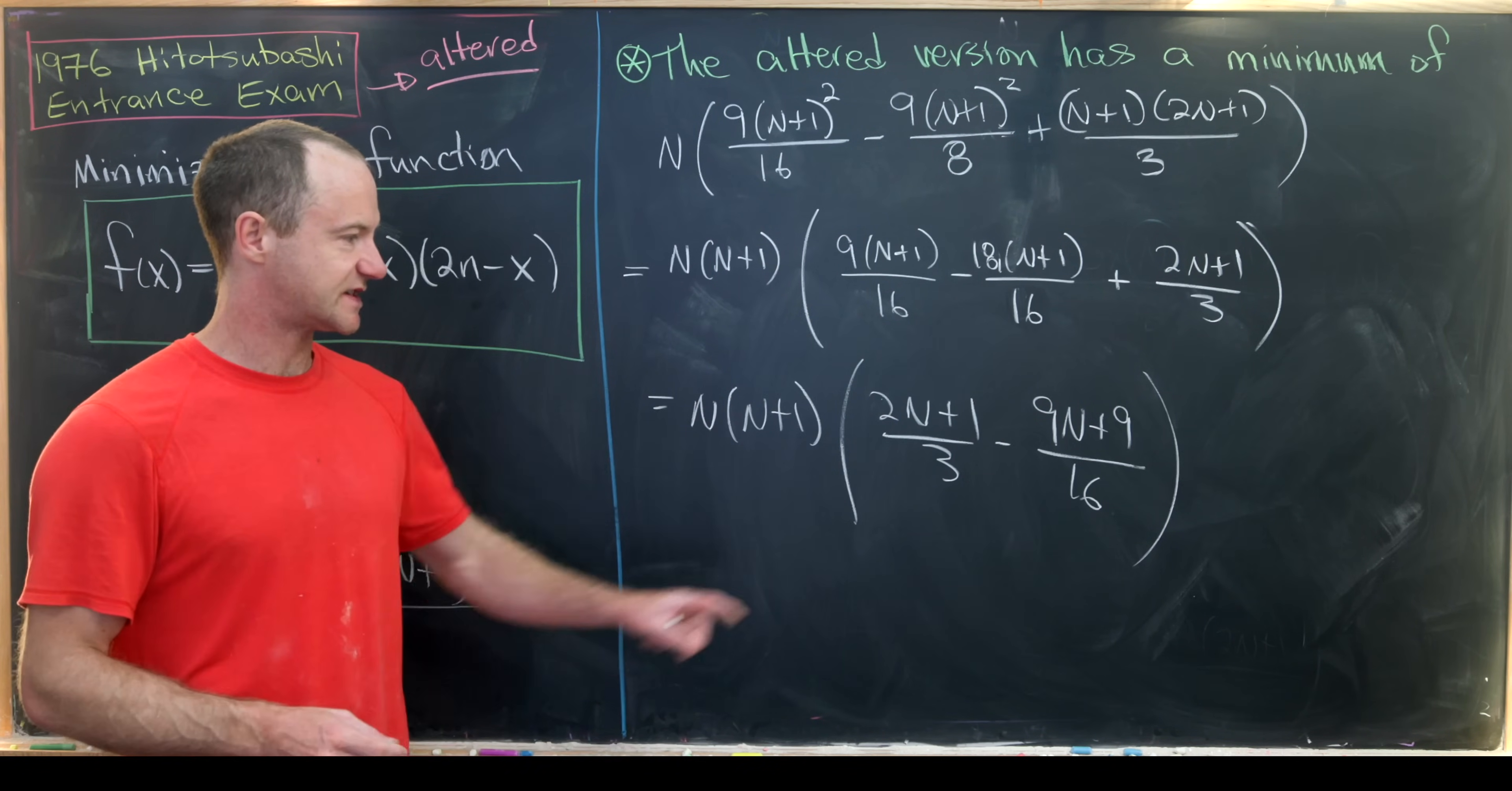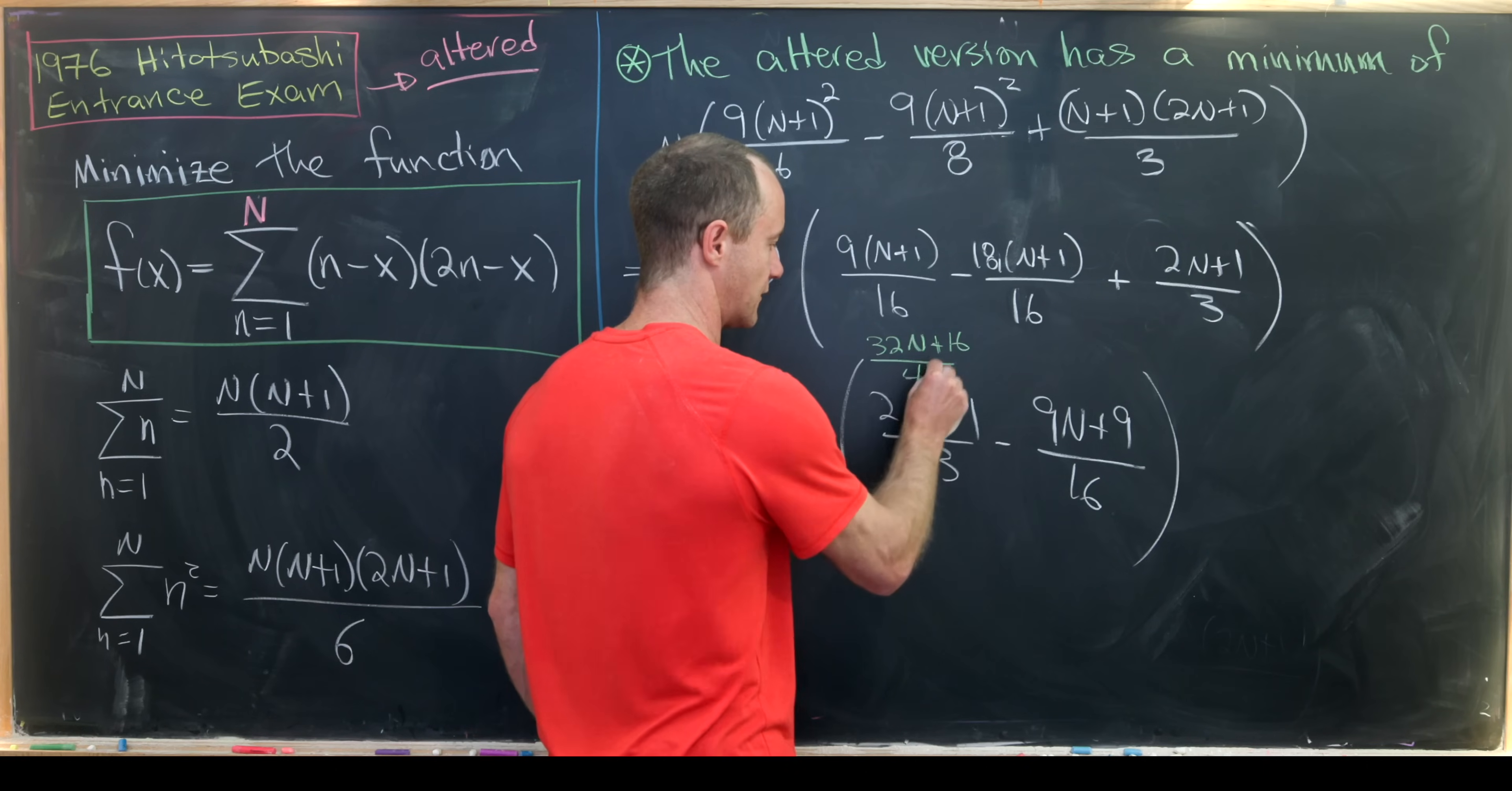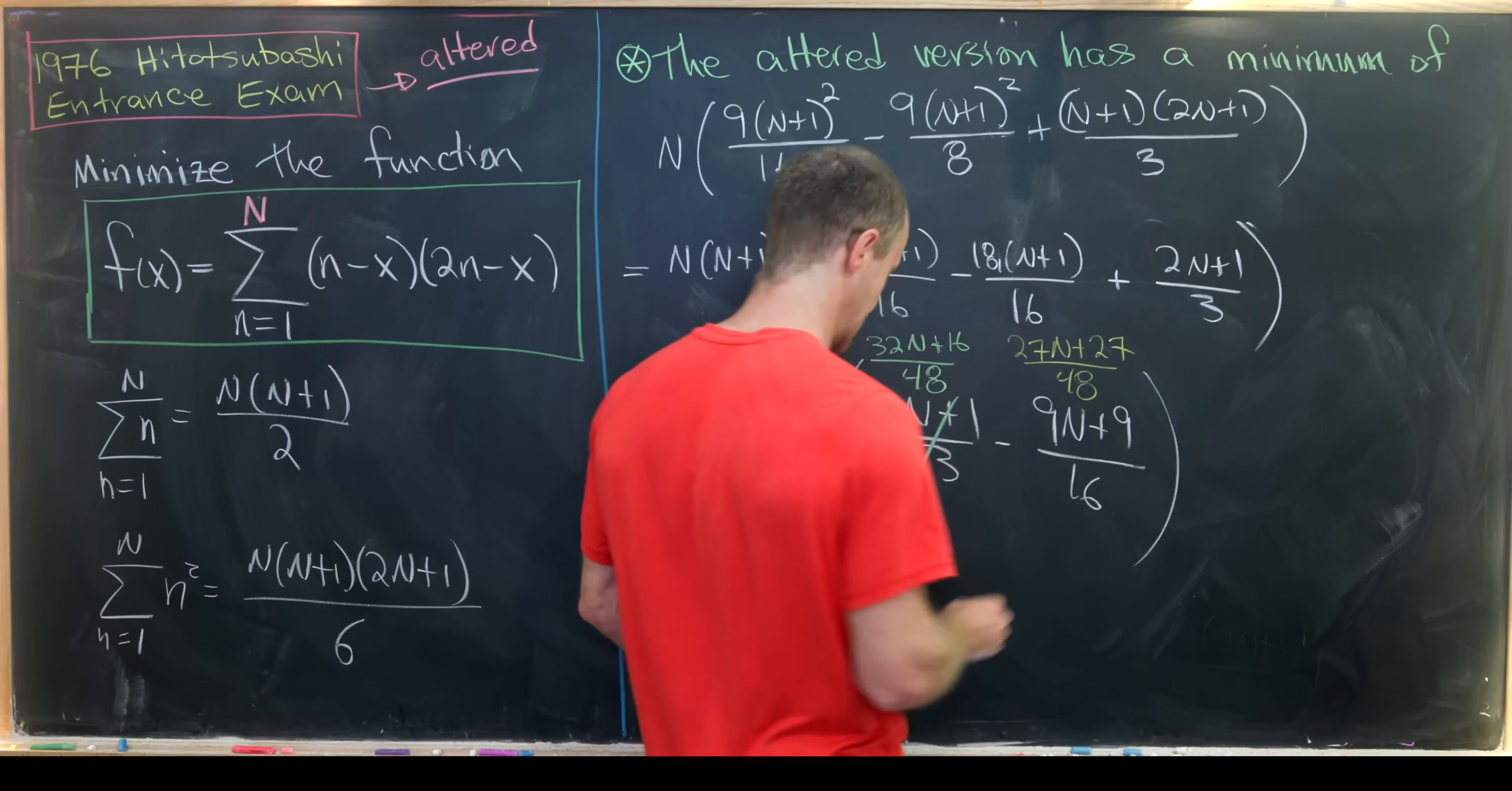And now let's simplify this just a tad more by finding common denominators. We can multiply the numerator and denominator here by 16 and that'll give us something like (32N+16)/48. And then we can multiply by 3 over here. That gives us (27N+27)/48.